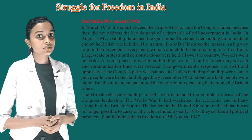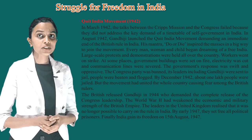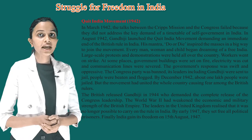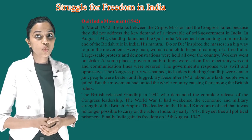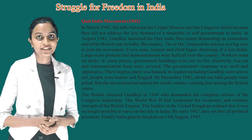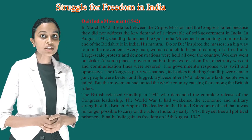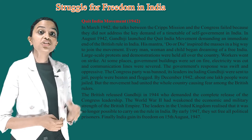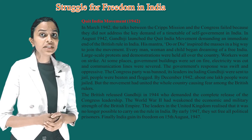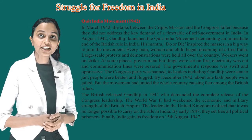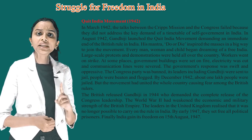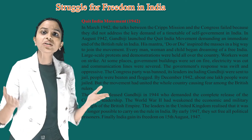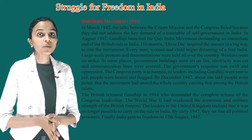Large-scale protests and demonstrations were held all over the country. Workers went on strike; at some places government buildings were set on fire, electricity was cut, and communication lines were severed. The government's response was swift and oppressive — the Congress party was banned, and its leaders including Gandhiji were sent to jail. People were beaten and flogged. By December 1942, about 1 lakh people were jailed. But the movement had united the whole country, causing fear among the British rulers.